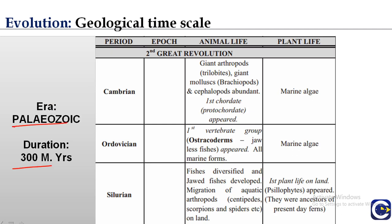The Paleozoic era lasted 300 million years and is divided into six periods: Cambrian, Ordovician, Silurian, Devonian, Carboniferous, and Permian. In the Cambrian period, all invertebrate phyla were established, trilobites and giant arthropods were abundant, and first chordates appeared; marine algae were the main plant life. In the Ordovician period, the first vertebrate group appeared — jawless fishes — and all forms were marine.